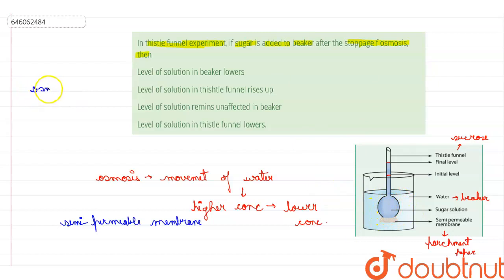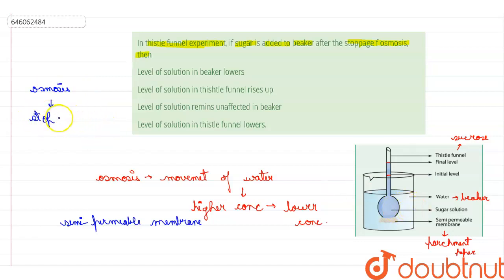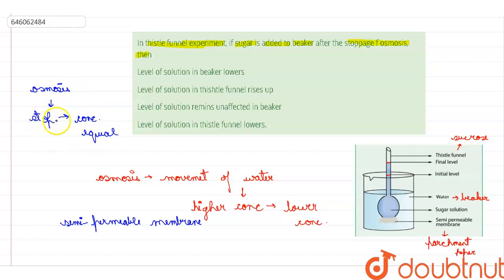Osmosis will stop when both concentrations become equal — that is, when the concentration of the beaker solution and the thistle funnel solution become equal, osmosis stops.